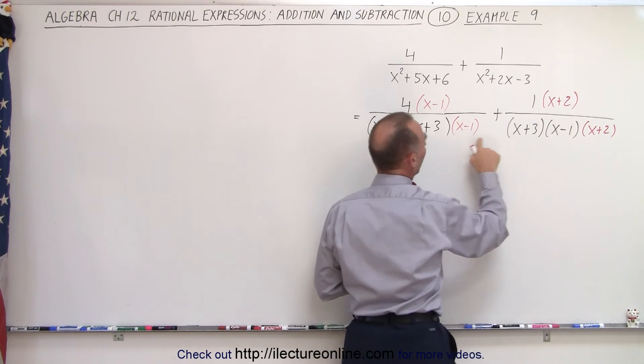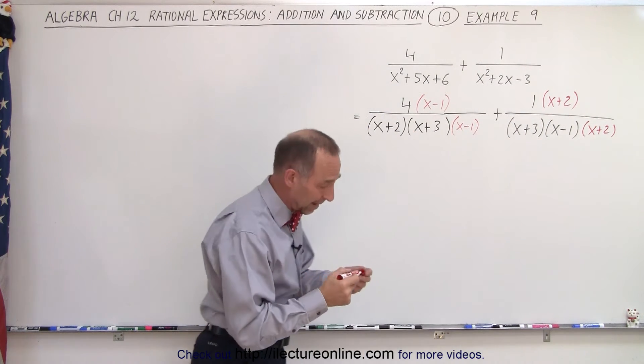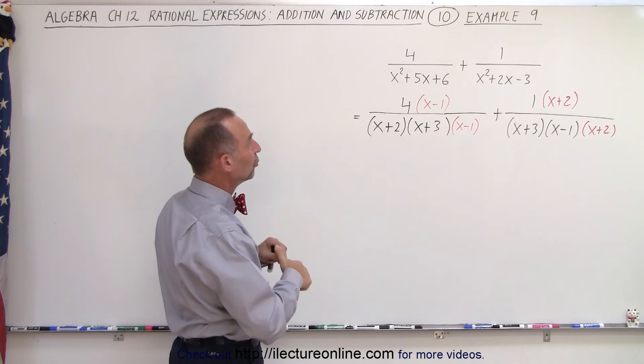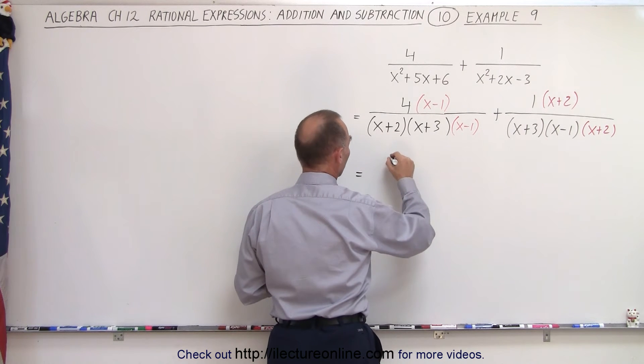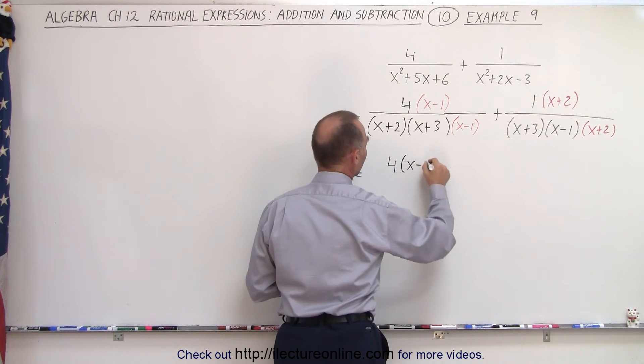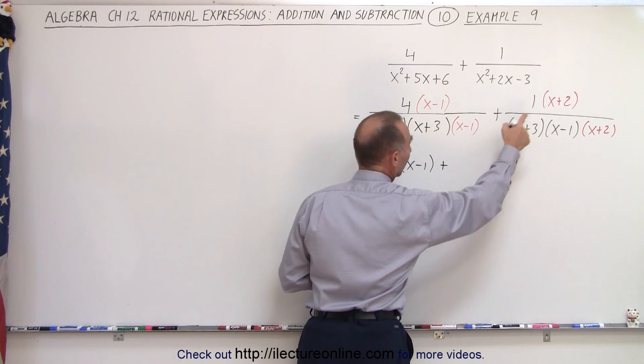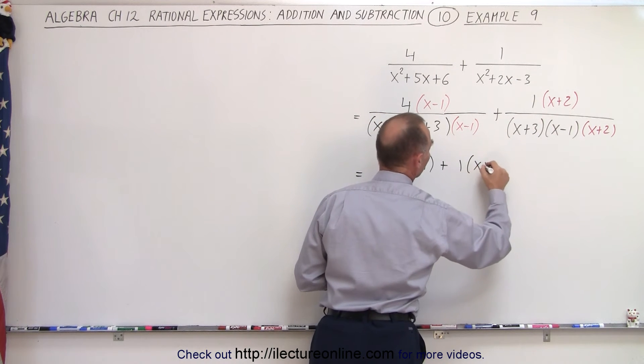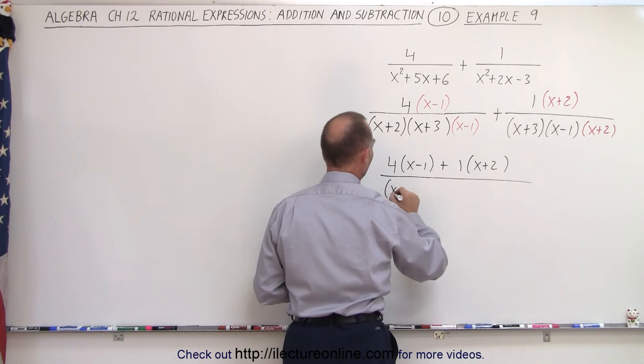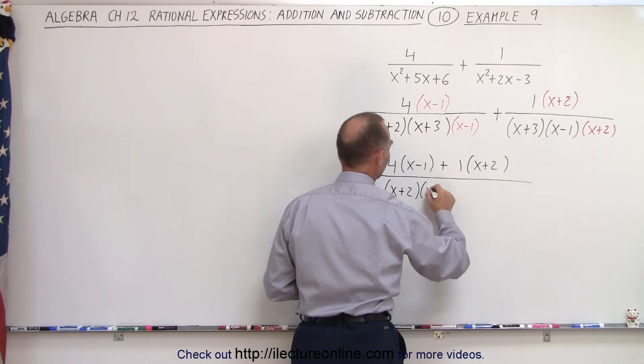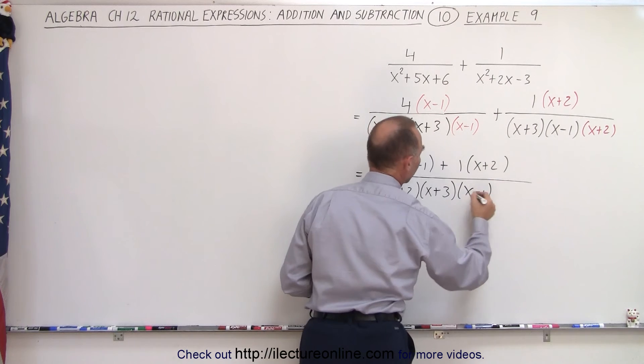Now notice the two denominators look exactly the same, they're common, we can now write the numerators over the same common denominator. So this is equal to 4 times x minus 1 plus 1 times x plus 2, all written over the same common denominator, x plus 2 times x plus 3 times x minus 1.